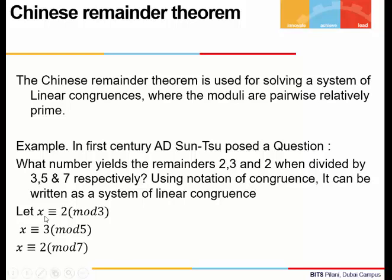We can see all these congruences are linear, there is no power to x. Another thing, the modulus 3 and 5, pairwise they are all relatively prime. 3 and 5 have gcd 1, 5 and 7 have gcd 1, and 7 and 3 also have gcd 1.